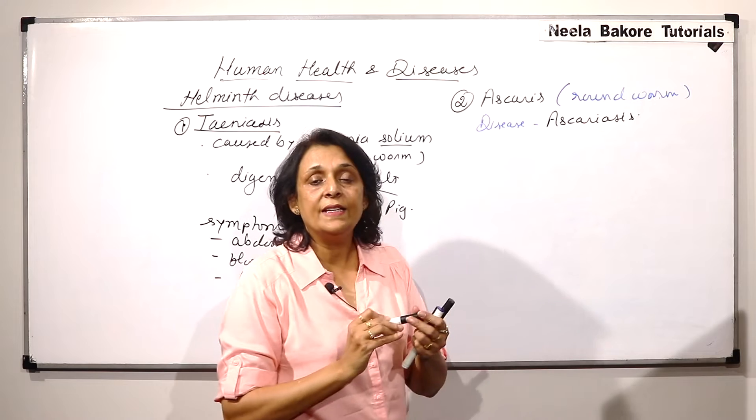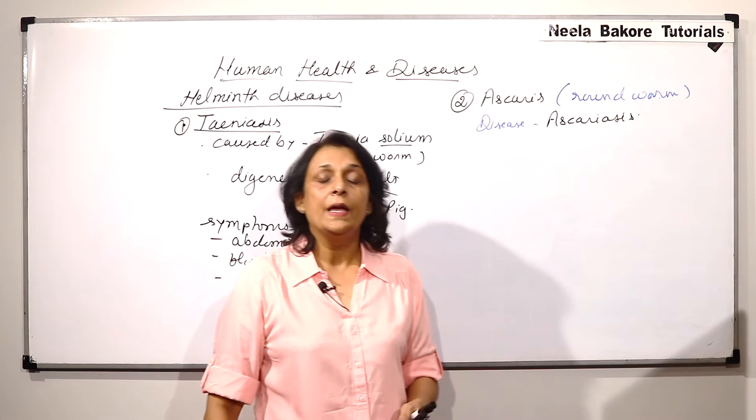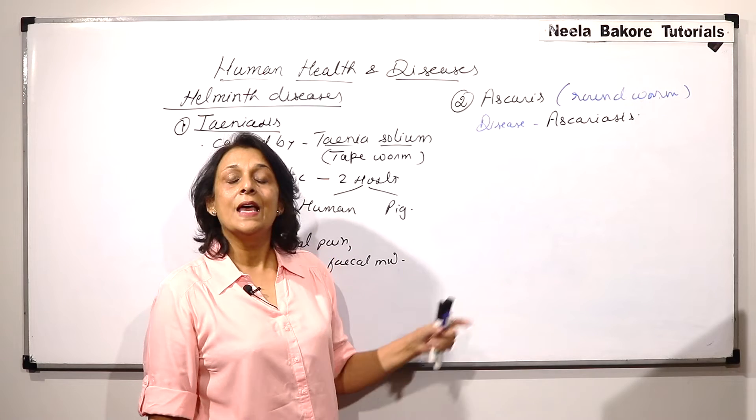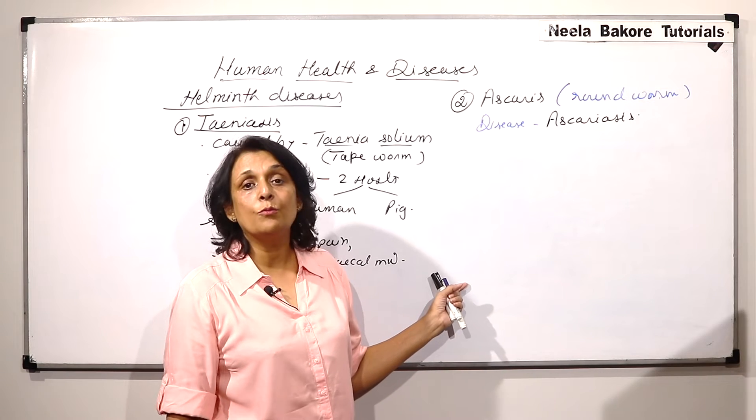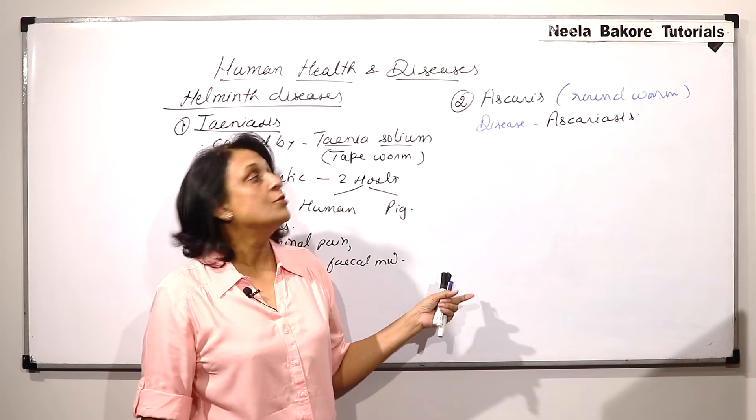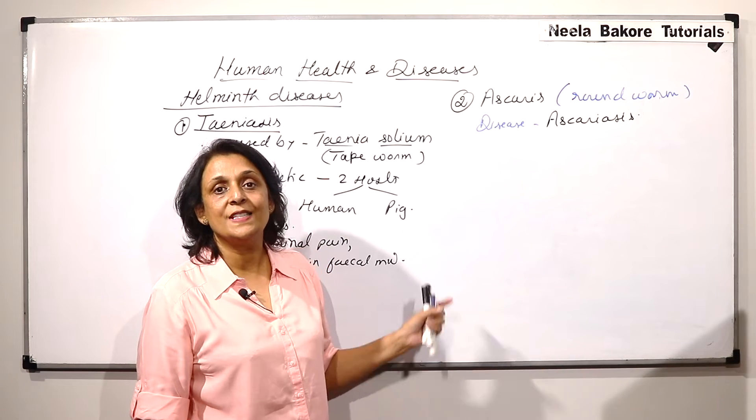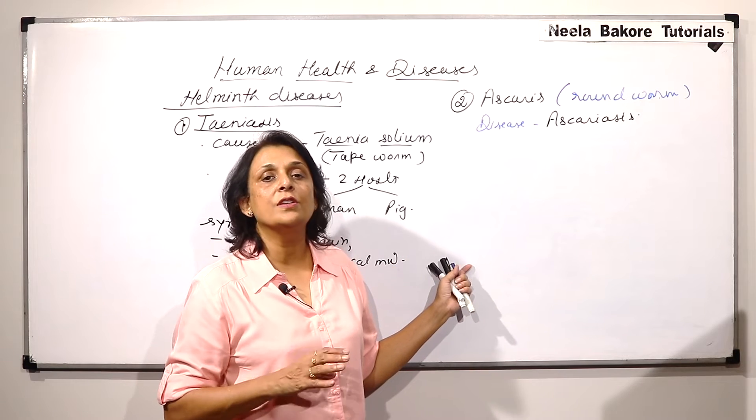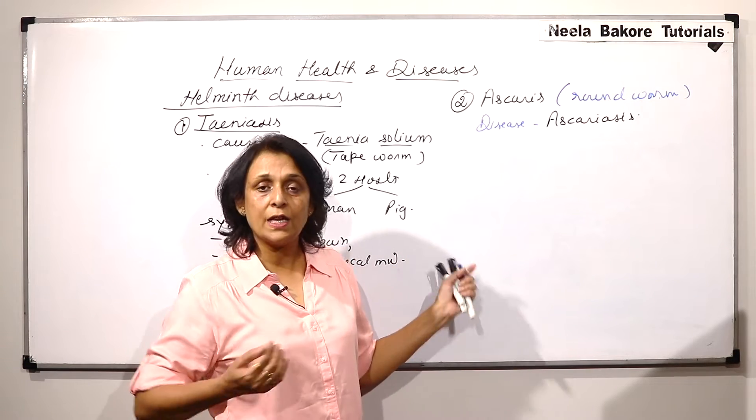This Ascaris which is called the roundworm, it belongs to Aschelminthes or Nemathelminthes and this is the first phylum where they show sexual dimorphism. Detail of Ascaris we study in animal kingdom but here we need to just understand what is the disease known as and what happens.